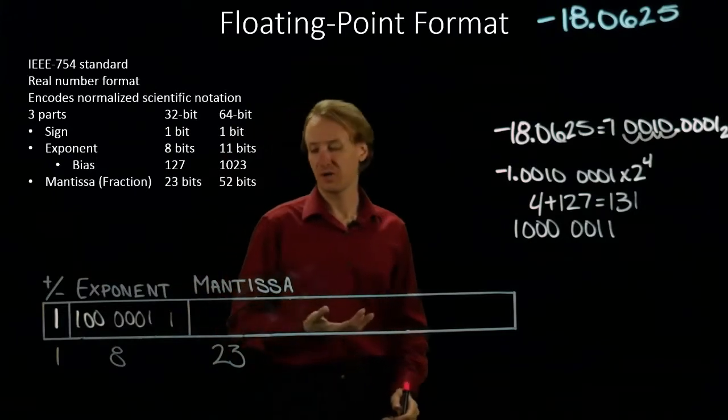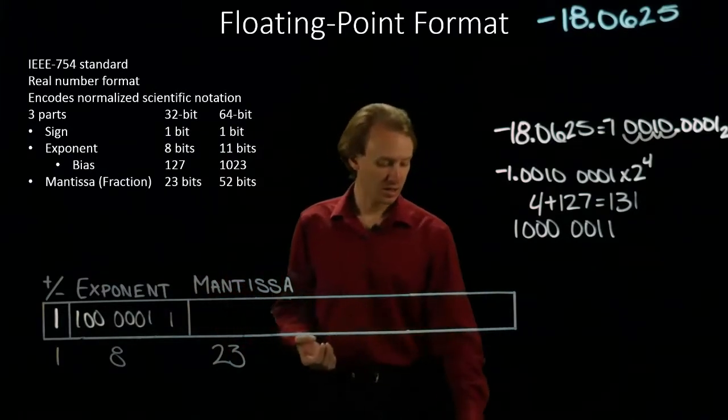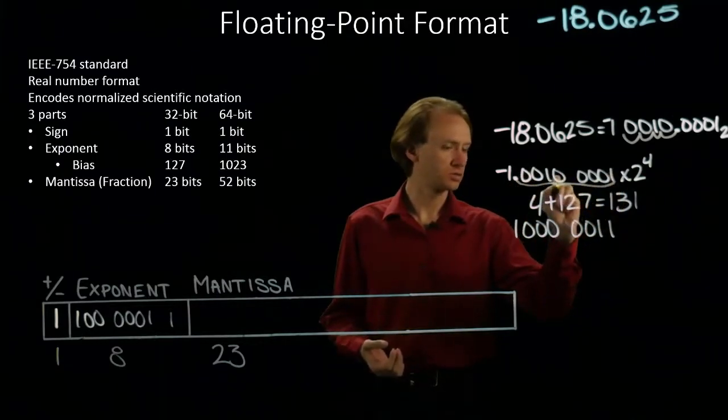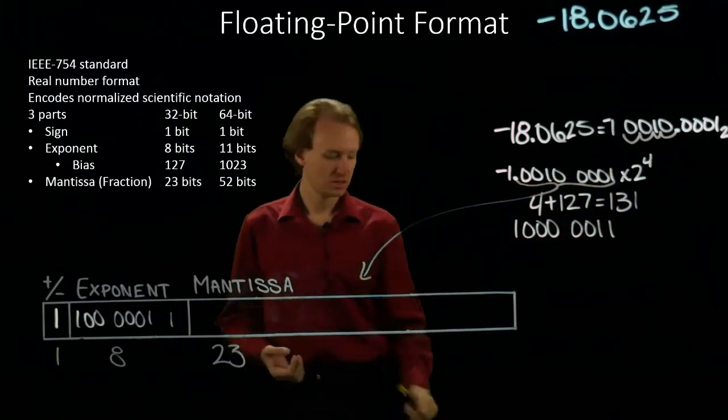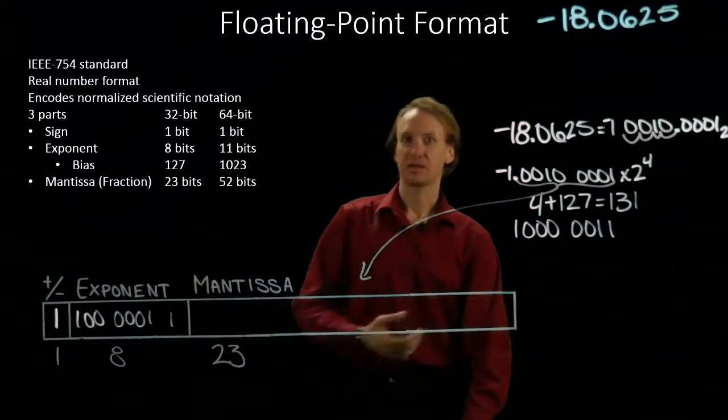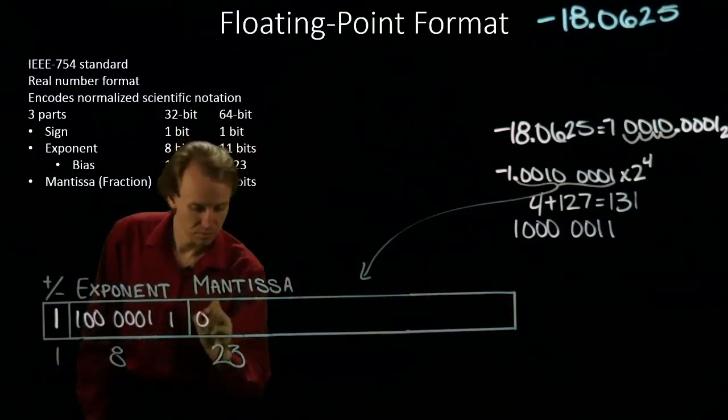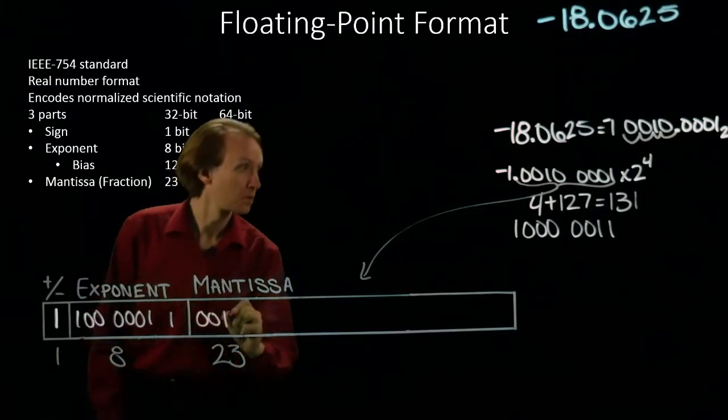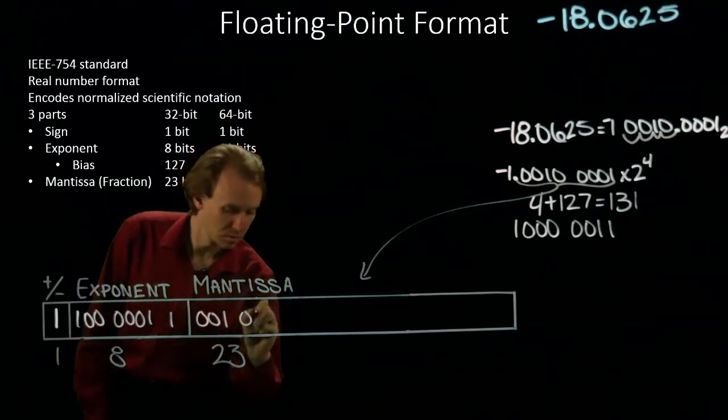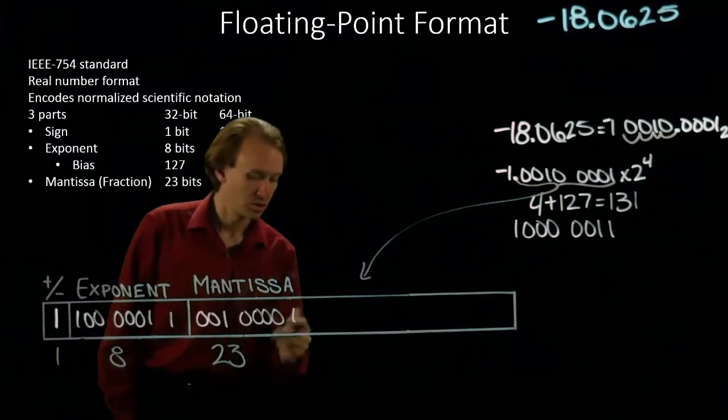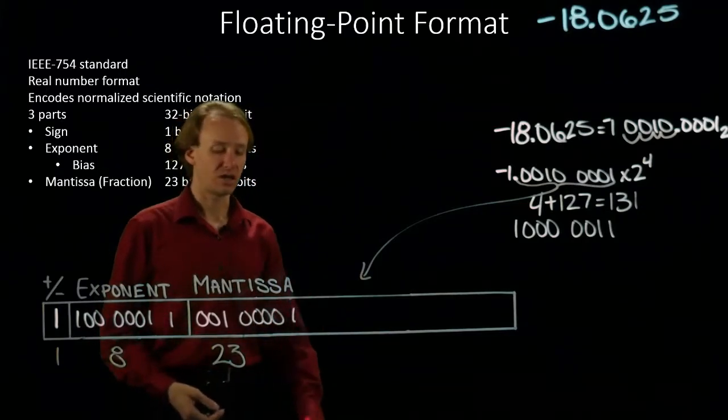And last I have my mantissa. My mantissa is everything after the binary point. So I will just copy all of that in and fill in the right-hand side with zeros.